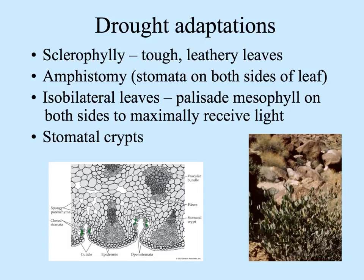Plants and leaves themselves show special adaptations to dryness. Sclerophylly means having leaves that are very tough and leathery. Some leaves have stomata not just on the bottom but on both sides — called amphistomy. The mesophyll, specifically the palisade mesophyll full of chloroplasts, can also be on both sides, creating isobilateral leaves that are held more upright to maximally receive light. In really dry conditions, plants may also have hairs on their leaves and stomata placed deep within crypts to reduce water loss.